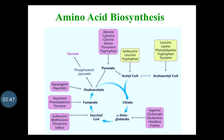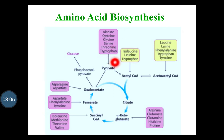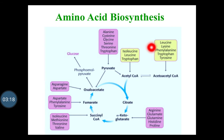The amino acid biosynthesis is used for the biosynthesis of the different amino acids. From the pyruvate, the biosynthesis of alanine, cysteine, glycine, serine, threonine and tryptophan get biosynthesized. From the acetyl-coenzyme A, the biosynthesis of leucine, lysine, phenylalanine, tryptophan and tyrosine takes place.